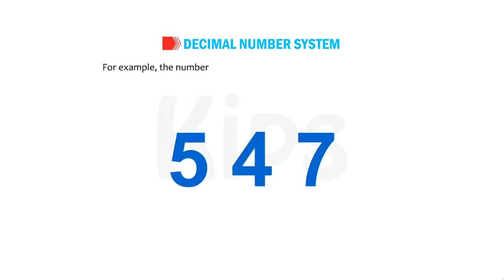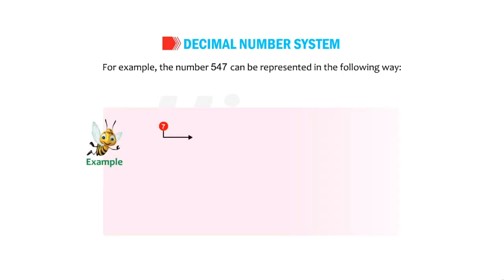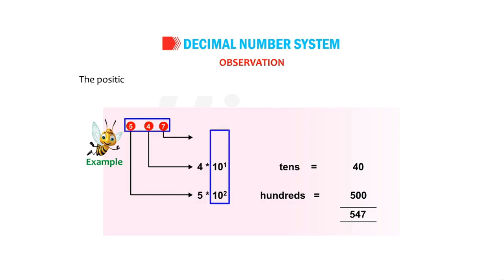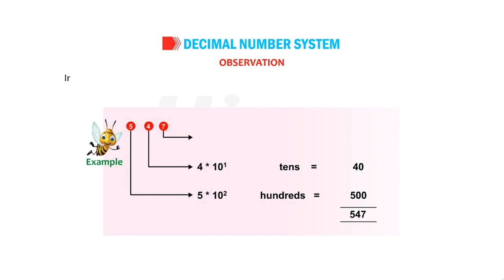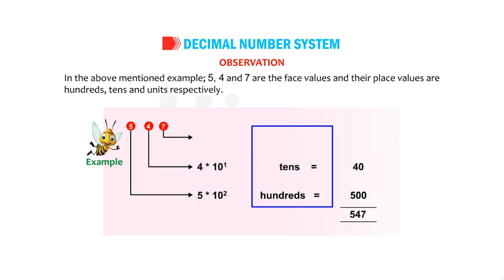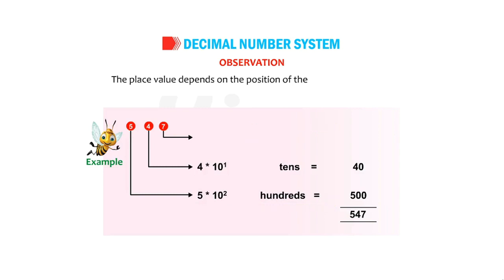For example, the number 547 can be represented in the following way. From this we observe that the positional value of each digit increases 10-fold as we move from right to left. In the above example, 5, 4, and 7 are the face values and their place values are hundreds, tens, and units respectively. The place value depends on the position of the digit in the number.